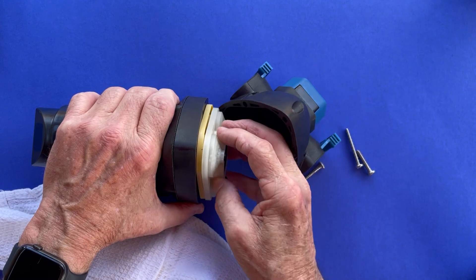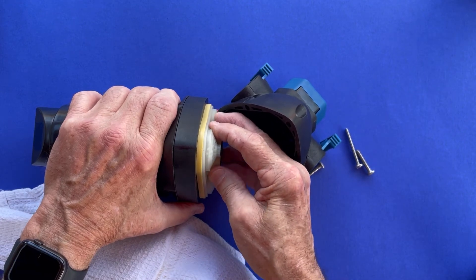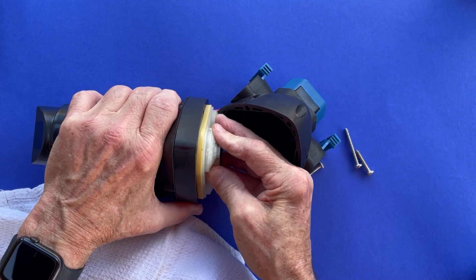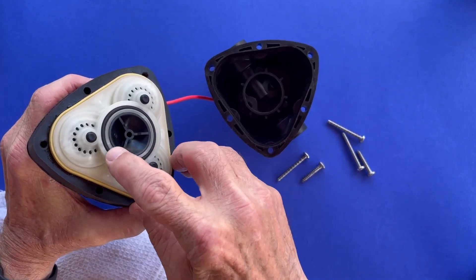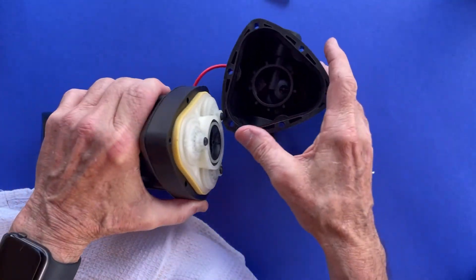Now take the new Viton valve block and drop it in place. Make sure it seats properly in the wobble plate seal. Also make sure the o-ring in the top of the valve block is seated properly.